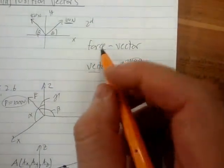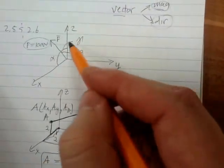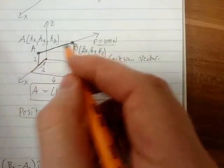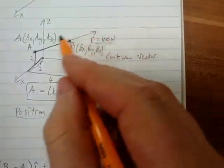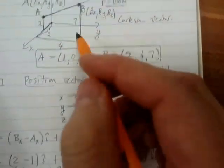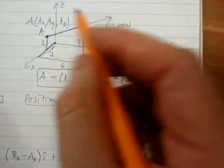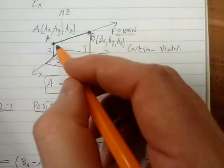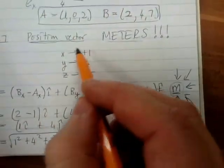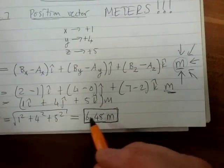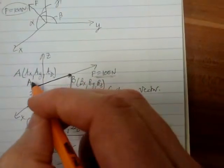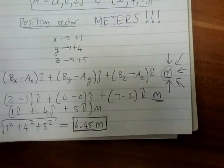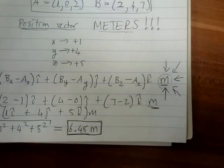To recap: we're still trying to convert our forces into Cartesian vector notation. Before, we had magnitudes and angles; here we have a magnitude and two coordinates. The first step is to determine our position vector between A and B, which tells us how to get from A to B. And if we calculate the magnitude of this position vector, it tells us the distance between those two points. We'll carry on with more examples and possibly section 2.8.